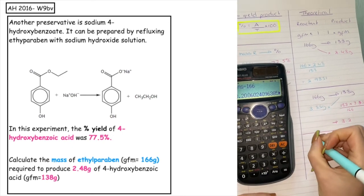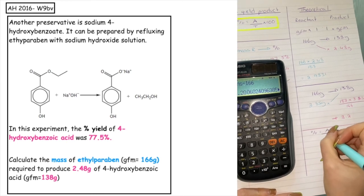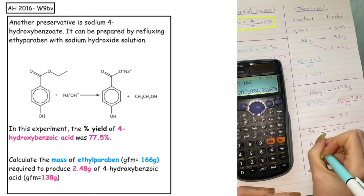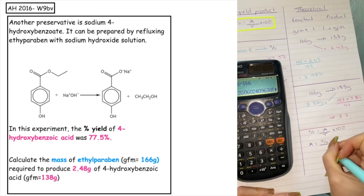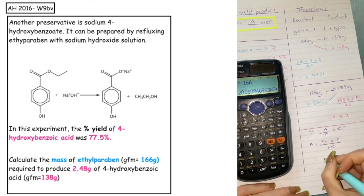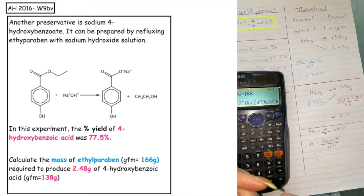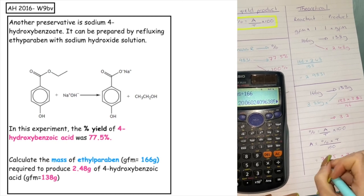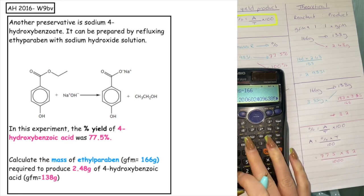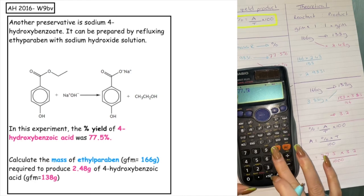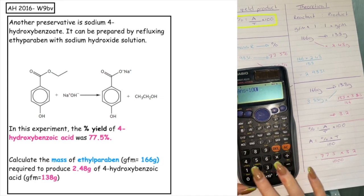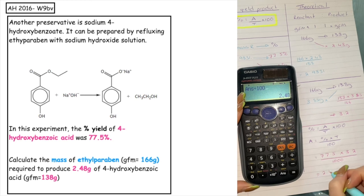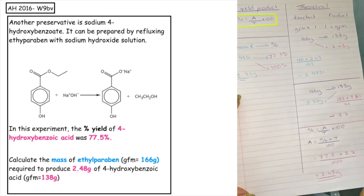Substituting into the final calculation: percentage yield equals actual over theoretical times 100. Rearranging for actual: A equals percentage times theoretical divided by 100. The percentage yield given was 77.5%, the theoretical we worked out is 3.2. So 77.5 times 3.2 divided by 100 — putting that into the calculator — gives exactly 2.48 grams, which tells us that the calculation is correct and we have an isolated result.